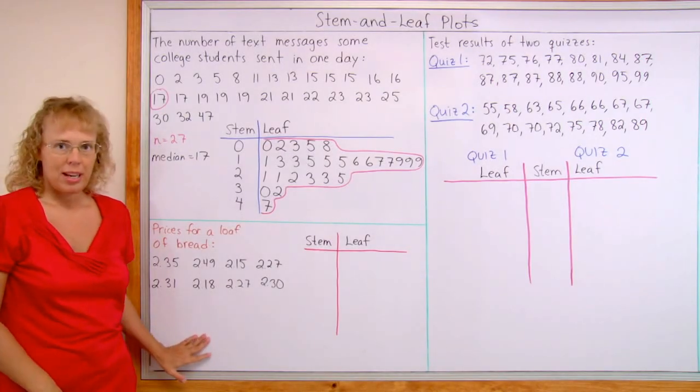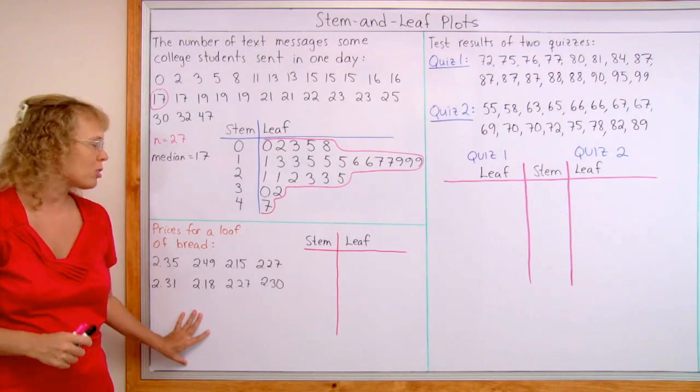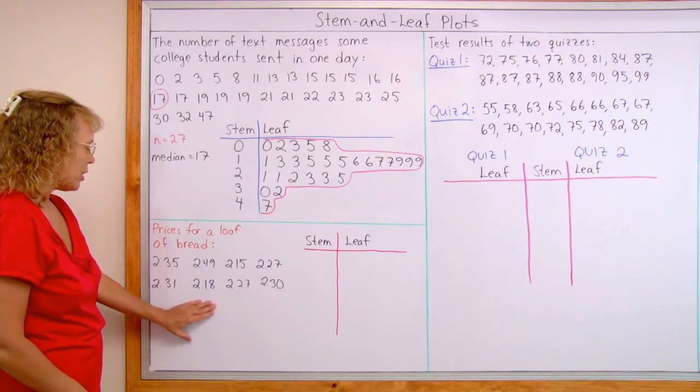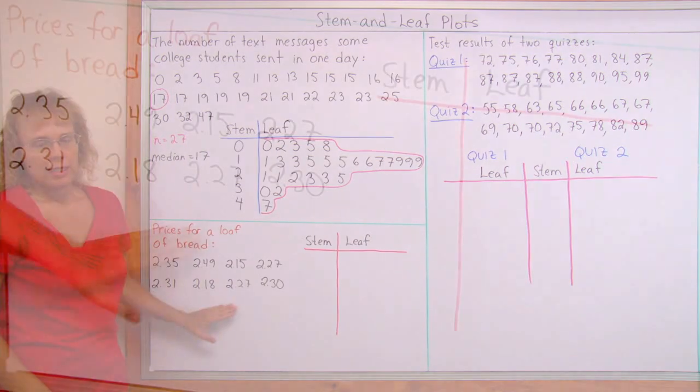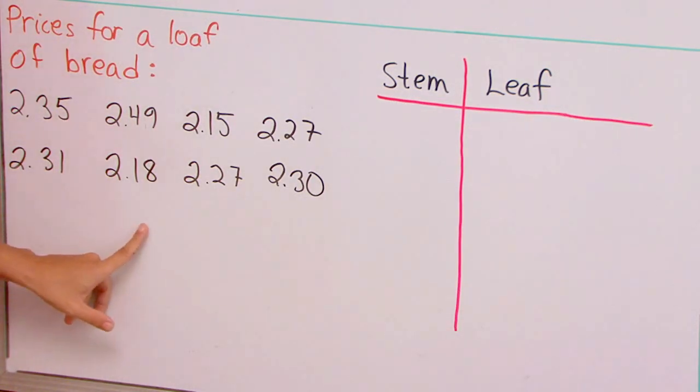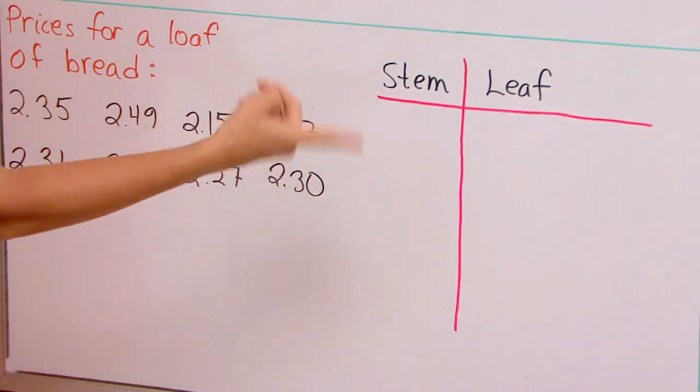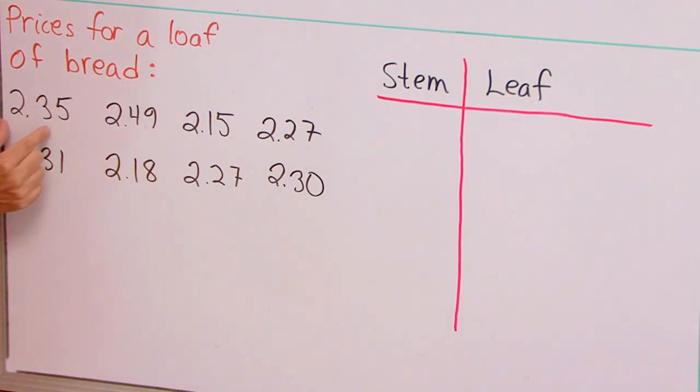Here are prices for a loaf of bread, maybe in eight different stores or something. So this would be dollar amounts. This time when I make the stem and leaf plot, I cannot use the tens and ones digits as stems and leaves. Instead, this time I will use these last digits as my leaves, and then take this two point three, two point four, those ones as my stems.